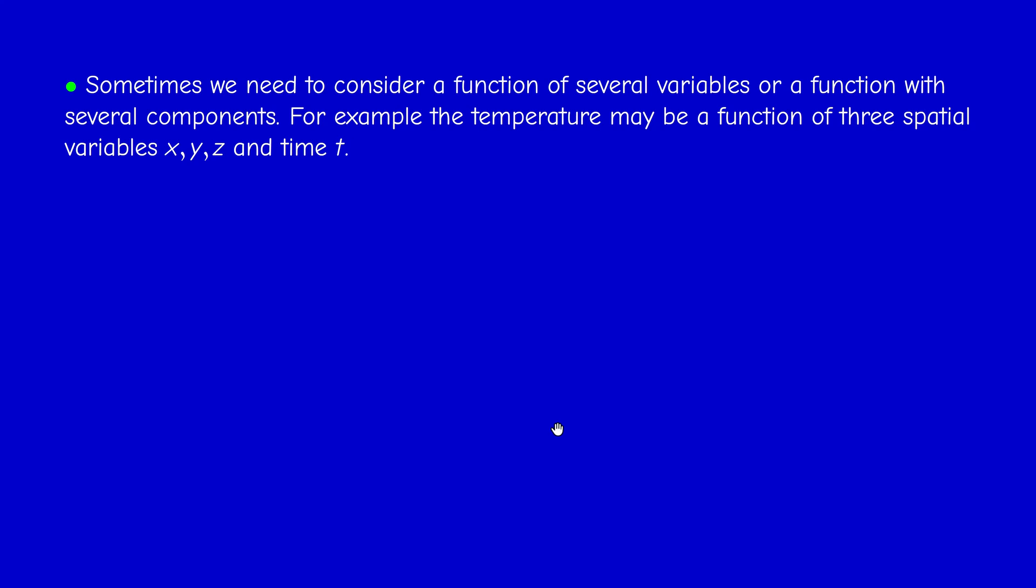Okay. So, for example, three spatial variables and time. So, four variables. And, they may have other variables as well. So, this is an example of what we call a scalar field, because the temperature is a scalar. Okay. So, here we have an example of a function of at least four variables.